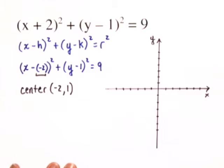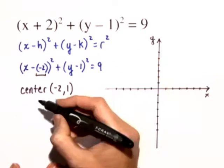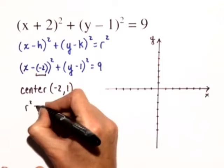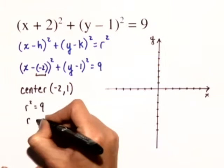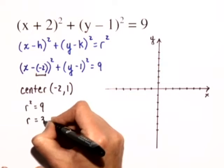So our center is negative 2, 1 and in this case r squared is equal to 9. So our radius, if I take the square root of 9, I get 3.